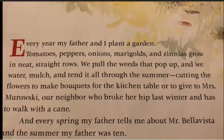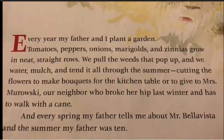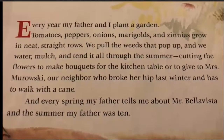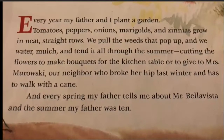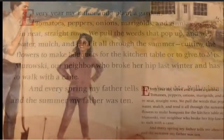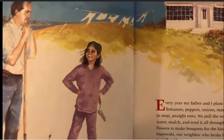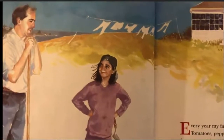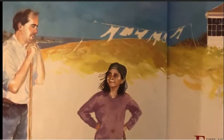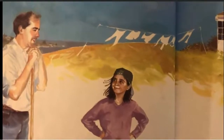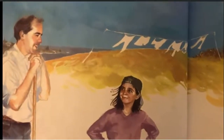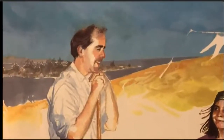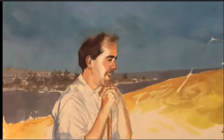Every year my father and I plant a garden. Tomatoes, peppers, onions, marigolds, and zinnias grow in neat straight rows. We pull the weeds that pop up and we water, mulch, and tend it all through the summer, cutting the flowers to make bouquets for the kitchen table or to give to Mrs. Murawski, our neighbor who broke her hip last winter and has to walk with a cane. And every spring, my father tells me about Mr. Bella Vista, and the summer my father was 10.